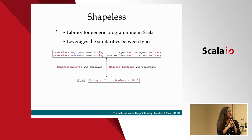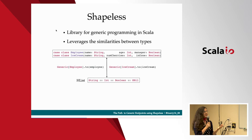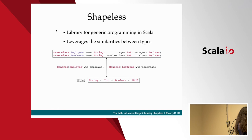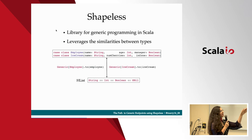The main usage for HLists is abstracting over arity. By throwing away all the unimportant details like the name of the case class, Shapeless makes it easier to focus on similarities between types and implement generic code. Like in this example, we have two very similar case classes — they both have three fields with the same types: string, int, and boolean. By just using the Generic type class from Shapeless, we can convert both of them to an HList that has the same type, which is pretty cool.